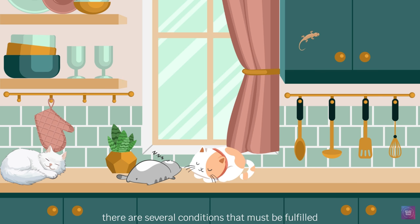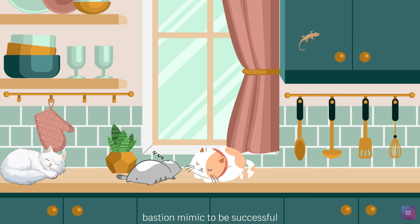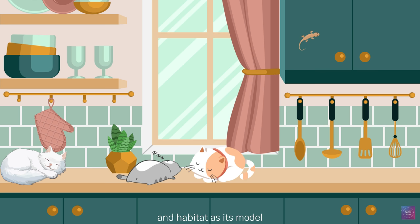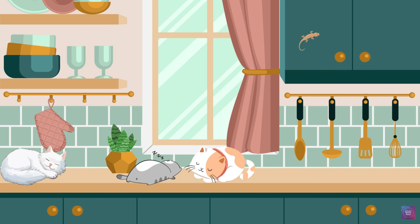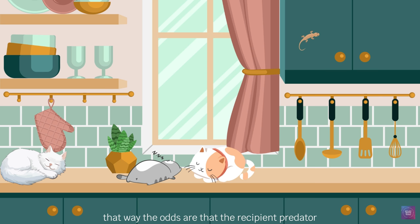There are several conditions that must be fulfilled for a Batesian mimic to be successful. The mimic must share the same general region and habitat as its model, but the mimic must also be less numerous than its model, which must be relatively abundant. That way, the odds are that the recipient predator will sample an unpalatable model first, which is very important for keeping the trick effective.